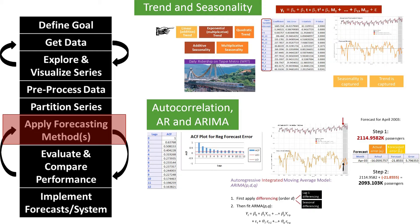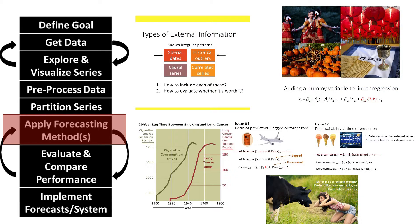We discussed automation of such methods and their pros and cons. In our last set of videos, we looked at different types of external information that we might want to include, and how we can use them as input into regression models for potentially improving our forecasts. We looked at holidays, outliers, and correlated and causal series.